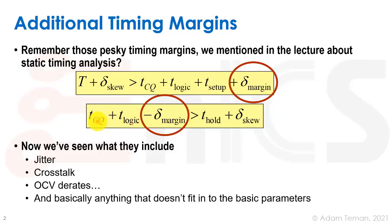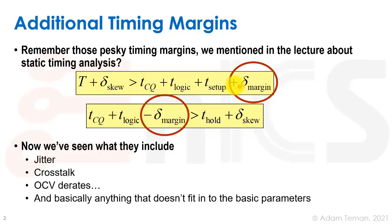We also had the min delay constraint where the launch path t_cq plus t_logic must be greater than t_hold, accounting for skew between start and endpoint registers plus a delta margin. Because the inequality direction differs, the delta margin is added with a plus sign on the min-delay side and subtracted with a minus sign on the max-delay side.